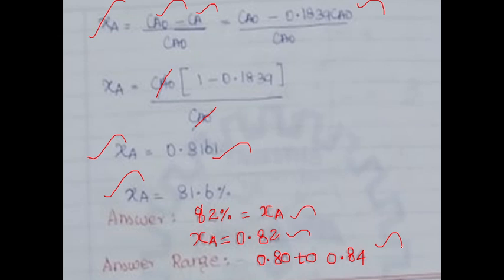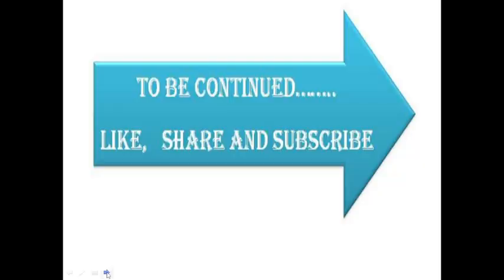Rounding the result, xA equals approximately 0.82, or 82%. The answer range given is 0.80 to 0.84, and our answer falls within this range. For further related videos, you can like, share, and subscribe to my channel. Thank you.